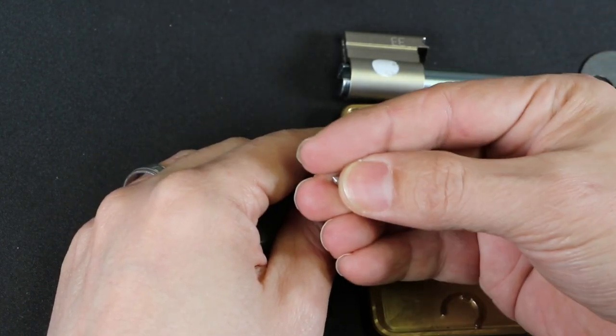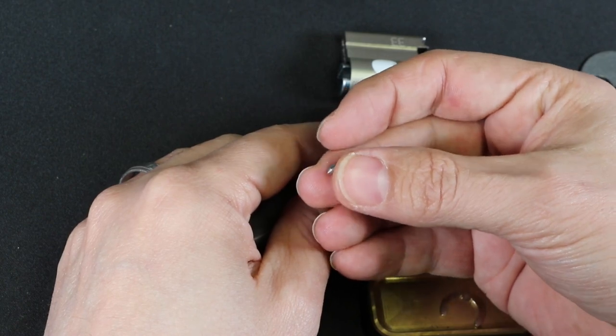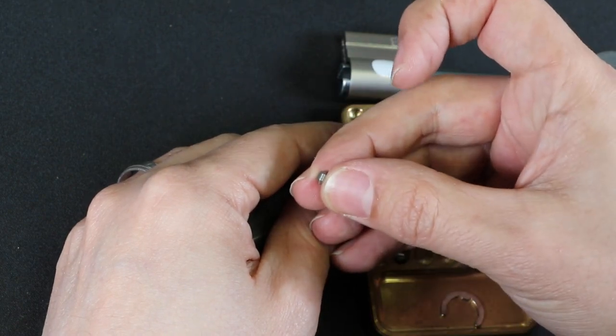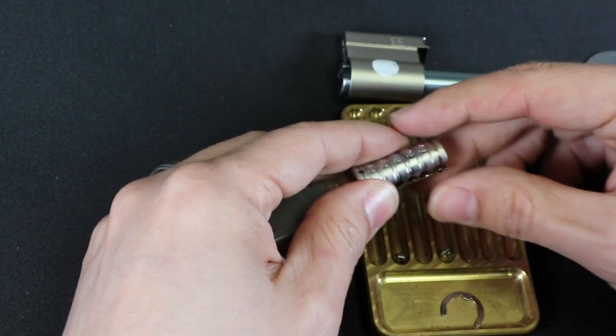There's number four and number two. And these passive pins are interesting. They're like, they're the same on both sides, so they can be put in either way around. They're like bi-directional.